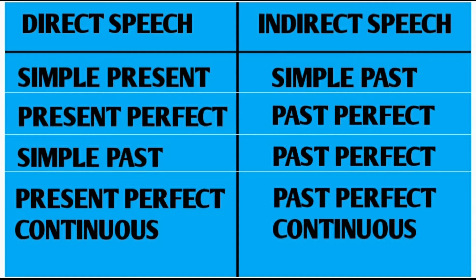When we change direct speech into indirect speech, there are certain changes in the tenses. Simple present tense becomes simple past. Present perfect tense becomes past perfect tense. Present perfect continuous tense becomes past perfect continuous tense. Let's learn the examples.